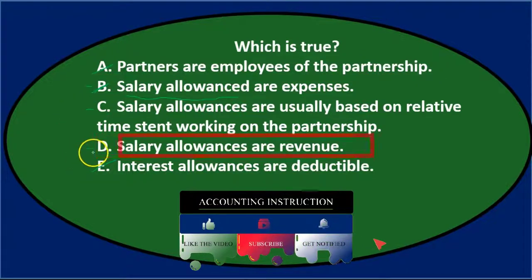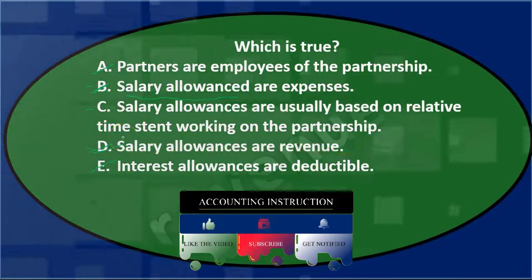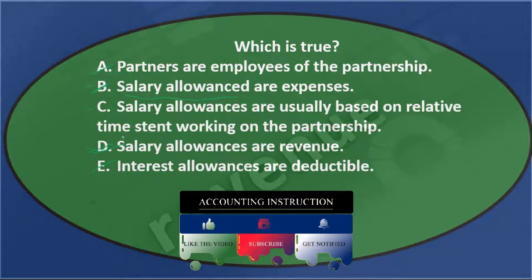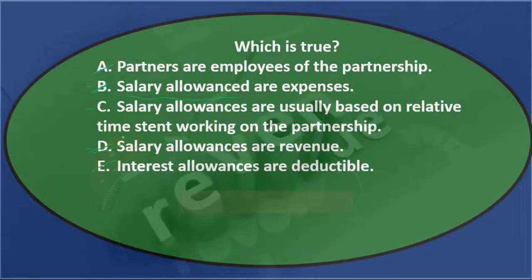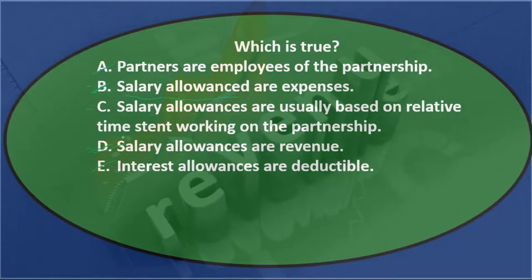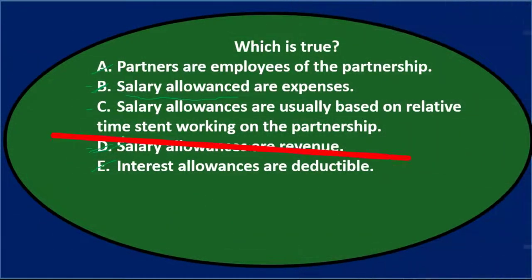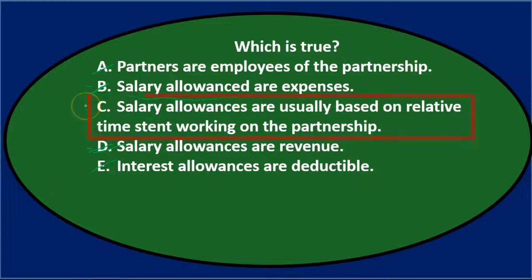D says salary allowances are revenue — that's not typically the case either. They might be considered revenue to the owner in some way, and they'll pay taxes on it, but they're not revenue to the partnership, which is what we're concentrating on. So C is going to be the most correct answer.